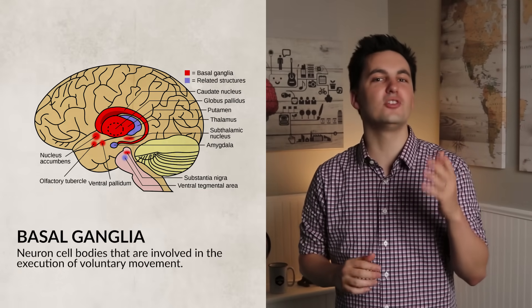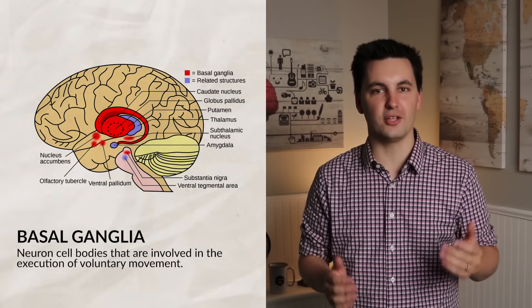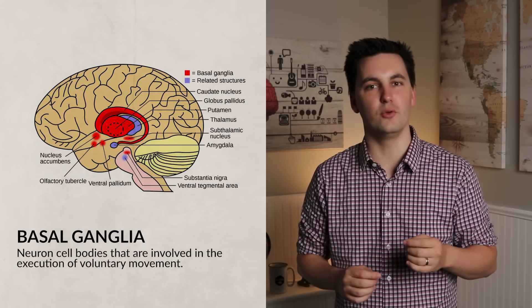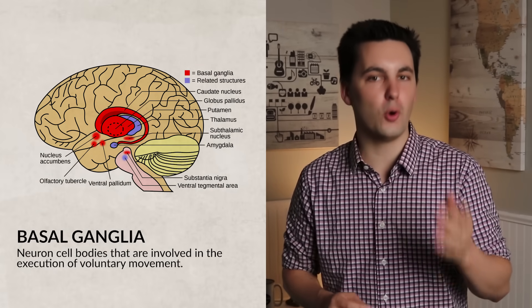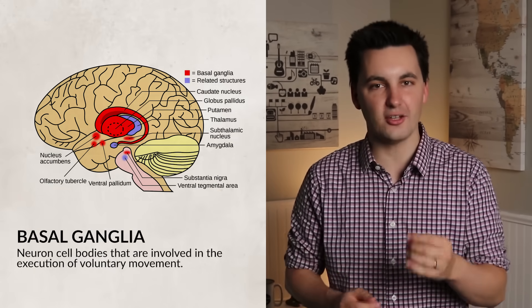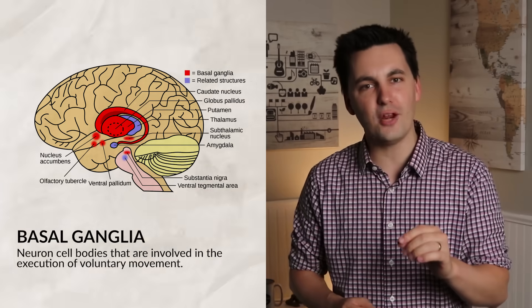And last, but certainly not least, we have the basal ganglia. These neuron cell bodies are involved in intentional body movement. They link the thalamus with the motor cortex. So the information that is sent from the motor cortex gets modified by the basal ganglia. Damage to this area leads to Parkinson's, cerebral palsy, and Huntington's disease. The basal ganglia are located in the midbrain and also the forebrain.